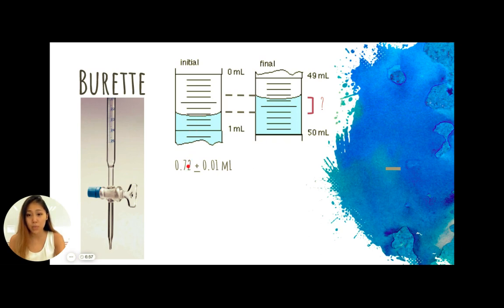0.72, this means I'm reporting until the hundredths place. So my uncertainty also needs to be to the hundredths place. This apparatus is really accurate so my uncertainty is going to be pretty low and I've set it at plus or minus 0.01 milliliters.